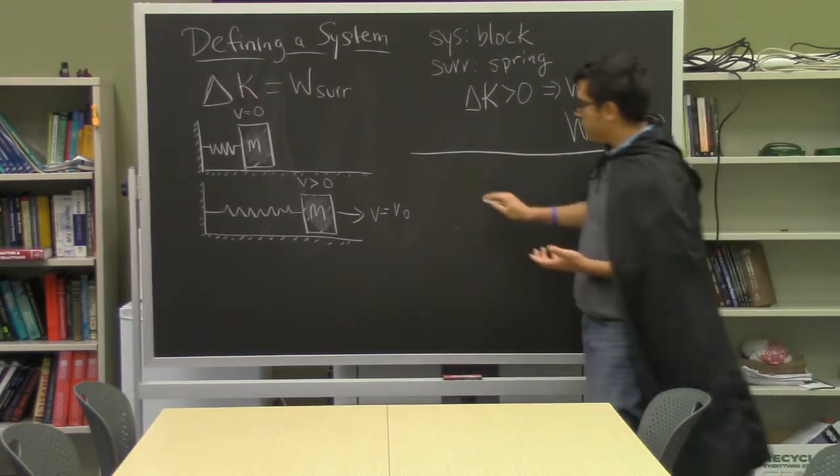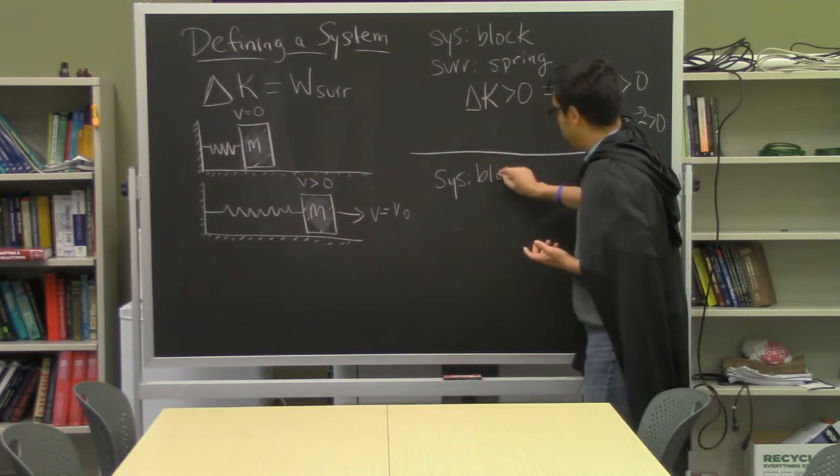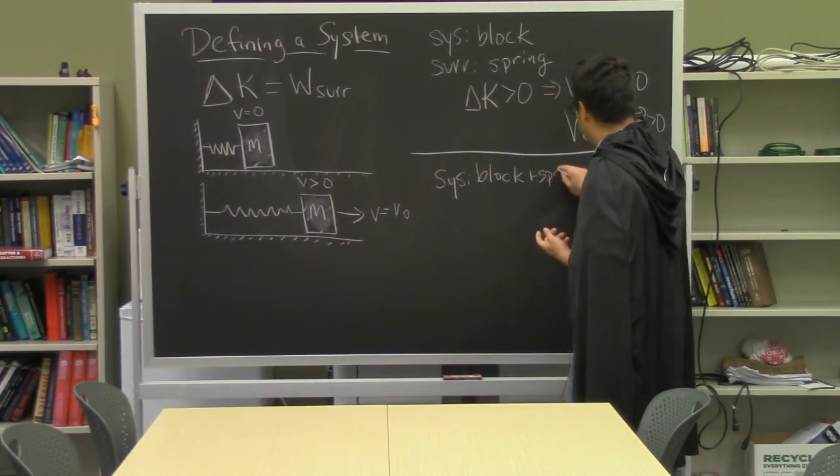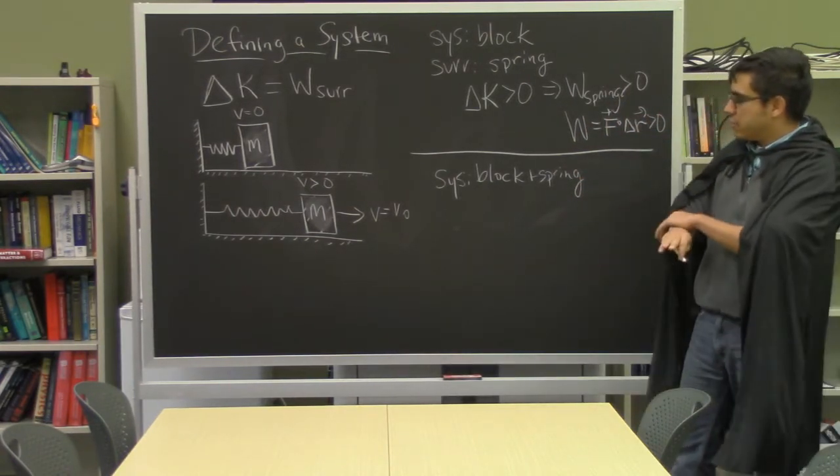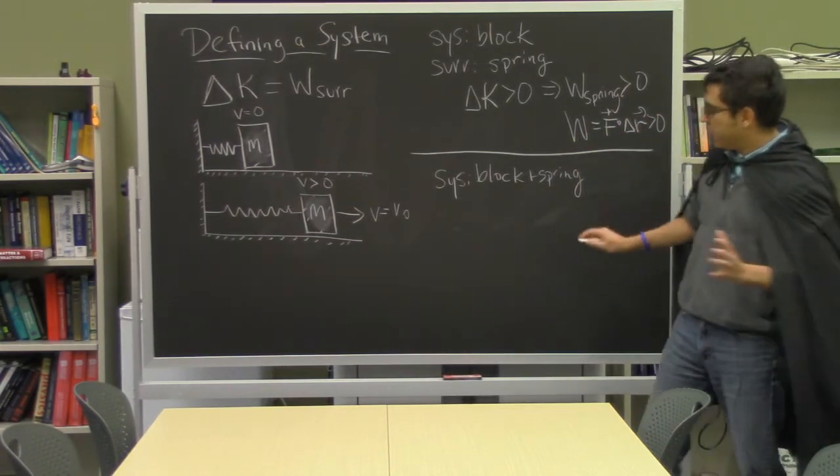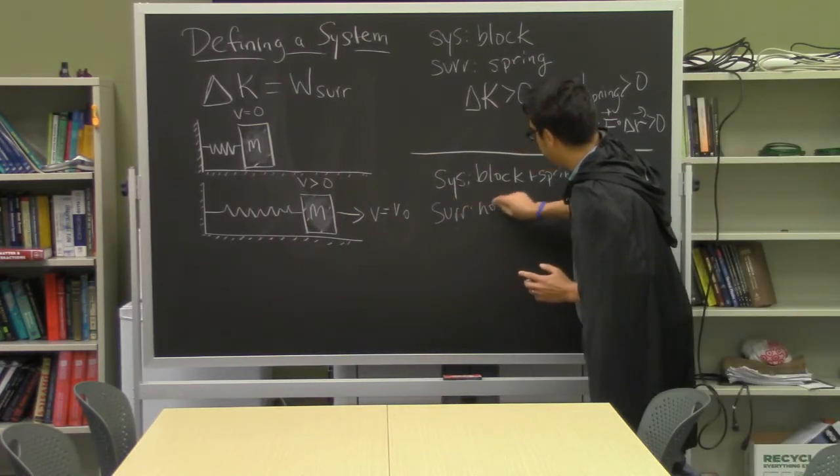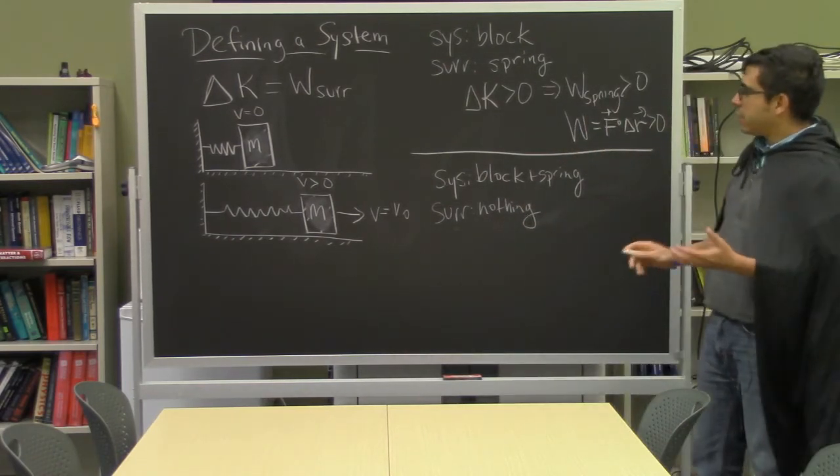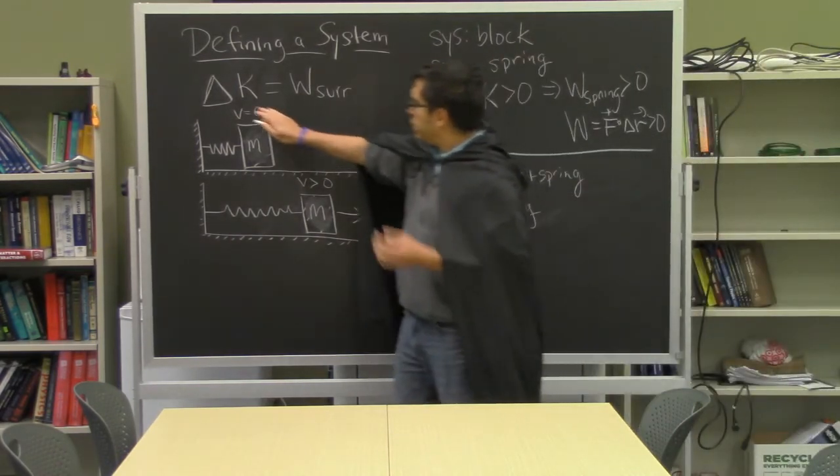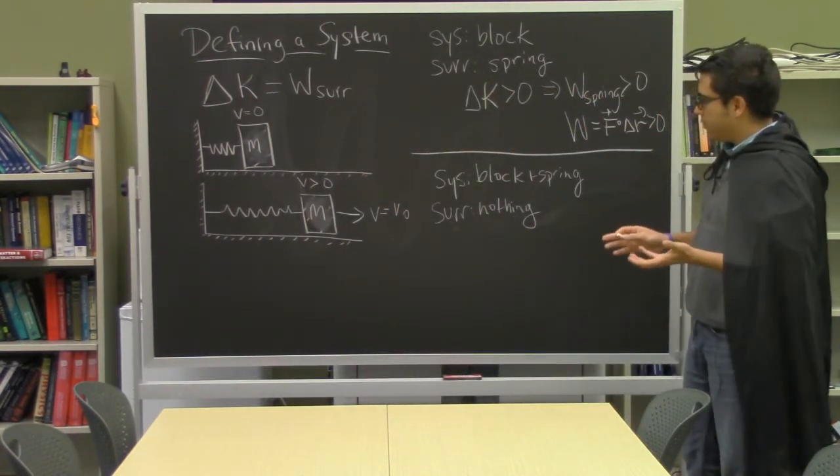Now instead we might think of a multi-particle system which consists of the block and the spring. And in that case we've excluded everything else from the surroundings, we're not worried about anything else in the surroundings. And so if we go back to our energy principle that the change in kinetic energy is equal to the work done by the surroundings, we get a little bit of a predicament there.